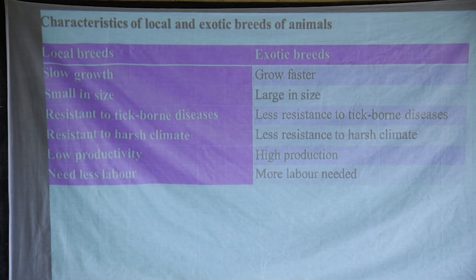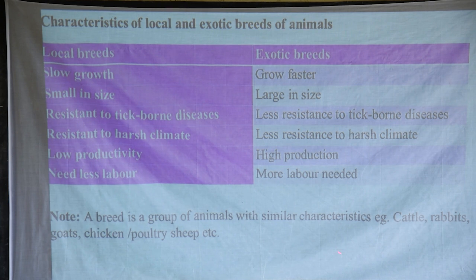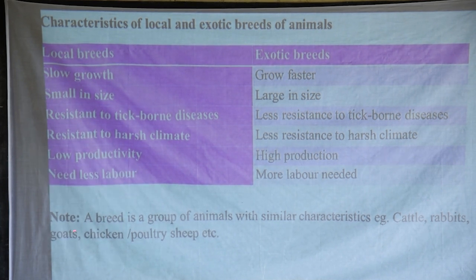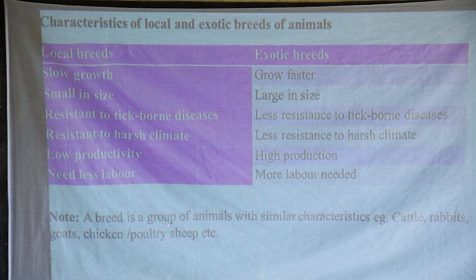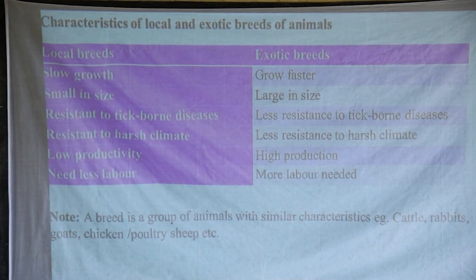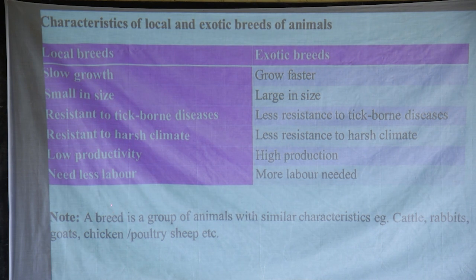To summarize: a breed is a group of animals with similar characteristics. They can be cattle breeds, rabbit breeds, goat breeds, chicken breeds which is poultry, or sheep breeds. Local breeds have got similar features among themselves, and exotic breeds have their own similar features. It is simply a group of animals with similar characteristics.